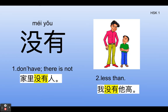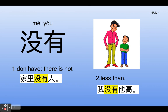没有. So, 没有 has two meanings. The first one: don't have, there is not. For example, 家里没有人 — There is nobody at home.